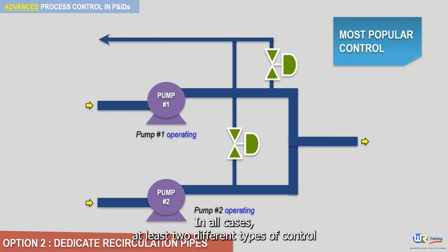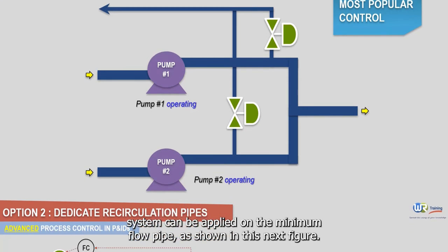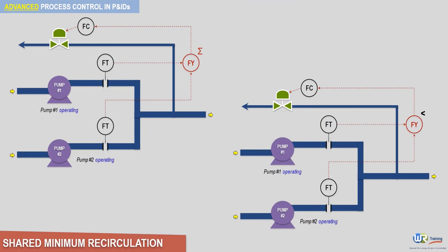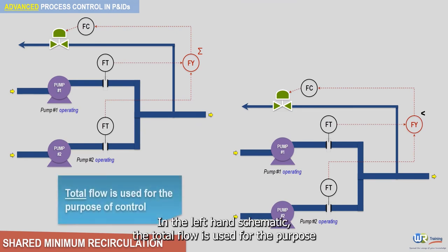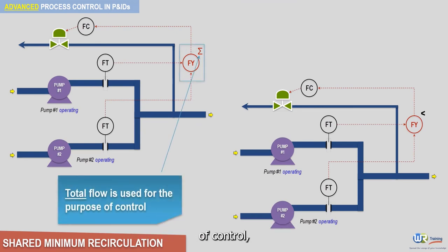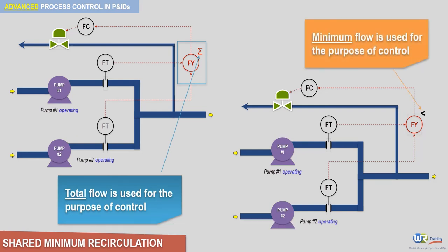In all cases, at least two different types of control system can be applied on the minimum flow pipe, as shown in this next figure. In the left-hand schematic, the total flow is used for the purpose of control, while in the right-hand schematic, the minimum flow is used.